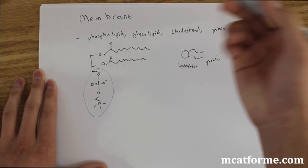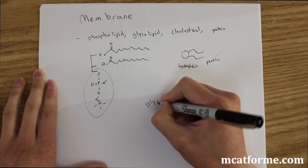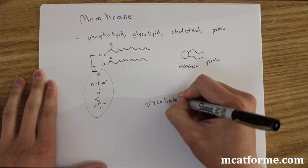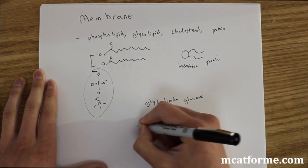So glycolipid pretty much looks the same thing except at the end instead of this choline you have some type of sugar. Glucose maybe. And so cholesterol.